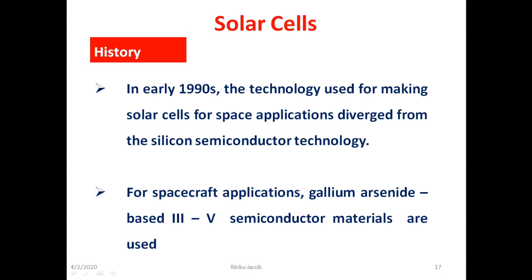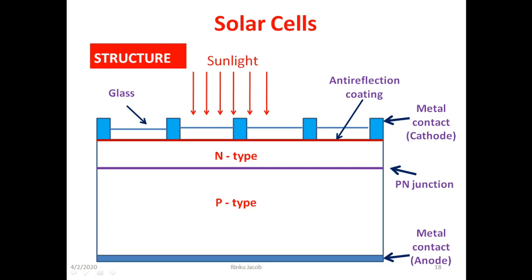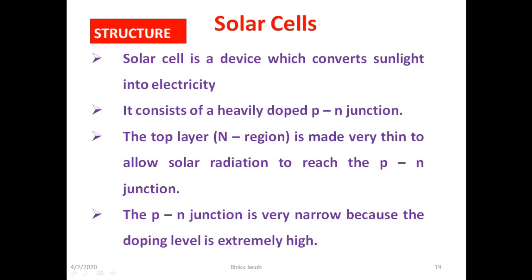Now we move on to the structure of a solar cell. As you can see in the figure it consists of a heavily doped PN junction. The top layer that is the N region is made very thin to allow solar radiation to reach the PN junction. The PN junction is very narrow because doping level is extremely high. The solar cells have larger surface area to receive a large amount of light. The anode connection is made from the bottom P layer and the cathode connection is made from the top N layer. Also an anti-reflection coating is made on top layer to prevent light losses due to reflection.